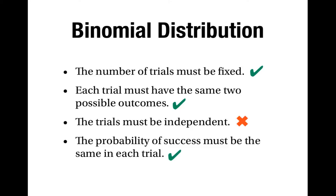It is true that the probability of success is the same in each trial — if we don't know anything about the outcome of previous trials then the probability of getting a king is always one in thirteen. But the fact that one of these criteria doesn't apply means that we can't use the binomial distribution to calculate probabilities in this case.